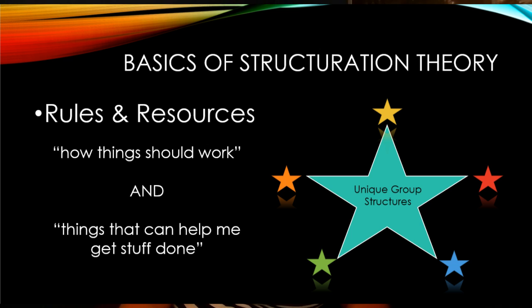First of all, he had two terms: rules and resources. Just like duality of structure, these two terms are foundational to his entire theory. Rules are each person's understanding of how things should work, whereas resources are things that can help me get stuff done. These rules are learned throughout your life, and the resources shift from time to time depending on your placement inside of the social structure.